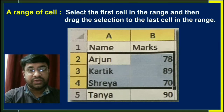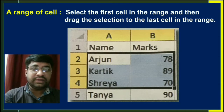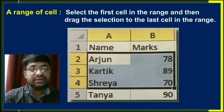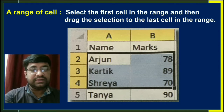If you want to select a range of cells, then select the first cell in the range and then drag the selection to the last cell in the range. You can see that in the diagram.